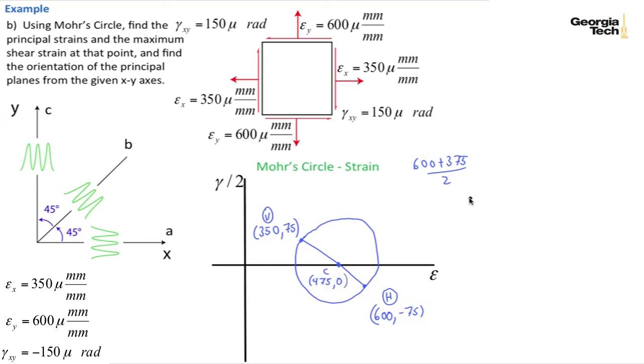Let's now do the radius. So I've got the radius is equal to, let's take this triangle here. I've got 600 minus 475 squared plus 75 squared. And the square root of that will give me my radius, and the radius ends up equaling 145.8.